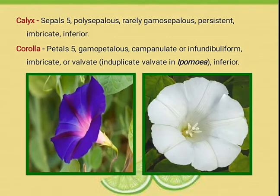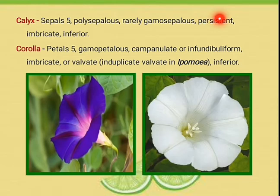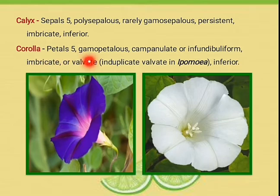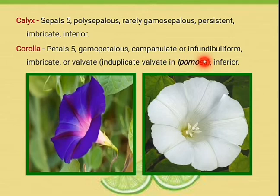Calyx consists of 5 sepals, polysepalous — that means sepals are free — rarely gamosepalous, that means sometimes sepals are fused. Persistent, that means sepals remain within the fruit. Imbricate aestivation. Corolla consists of 5 petals, gamopetalous — that means petals are fused — campanulate, that means bell-shaped corolla is present, or infundibuliform, that means the gamopetalous corolla is arranged in the form of a funnel. Imbricate or valvate aestivation, induplicate valvate in Ipomoea — a form of valvate in which the margins of the petals are folded inward — known as induplicate valvate type of aestivation.